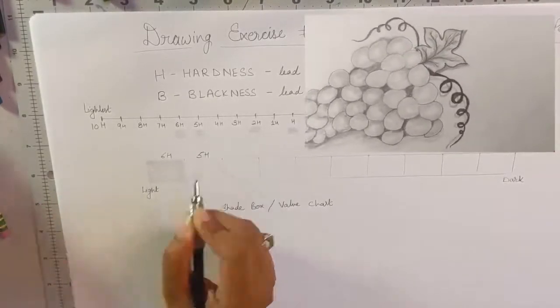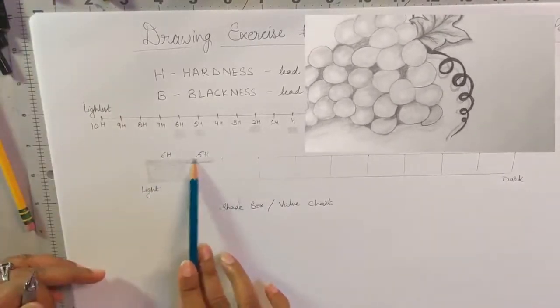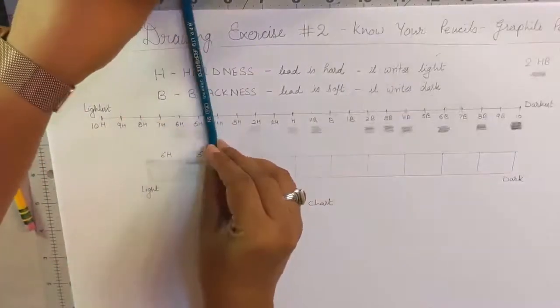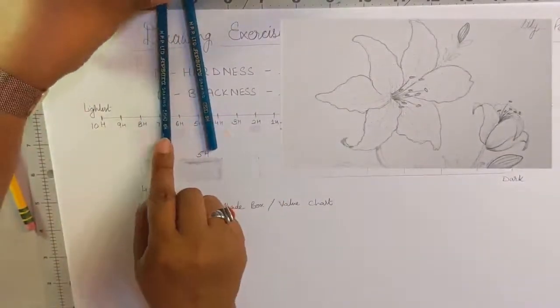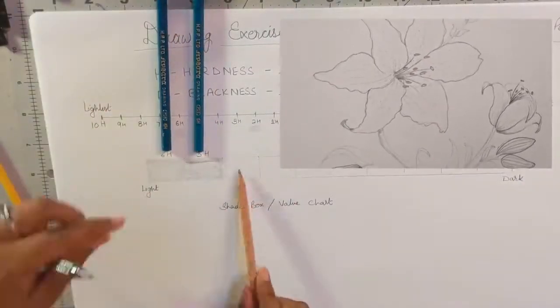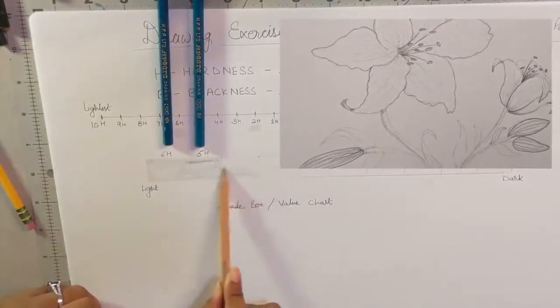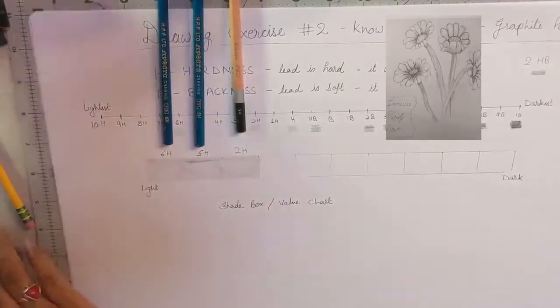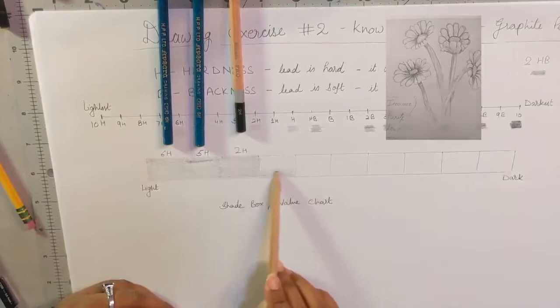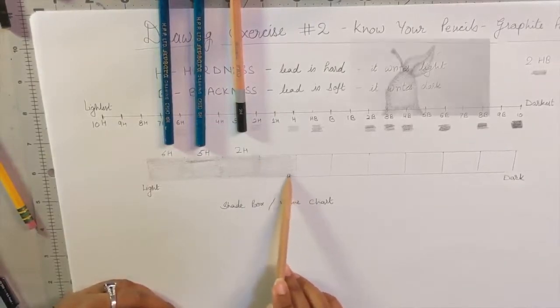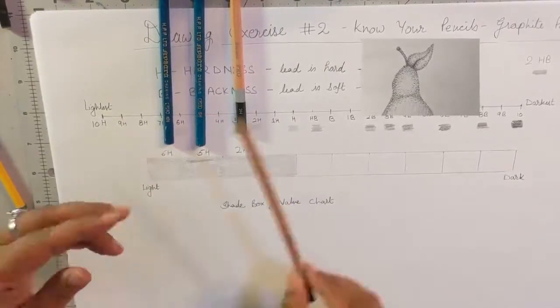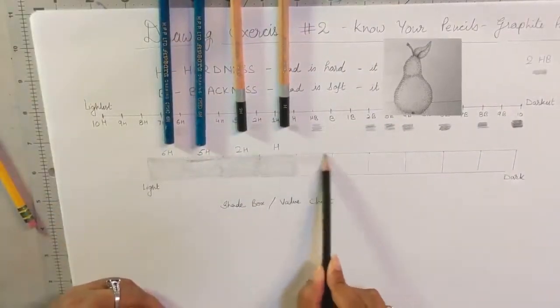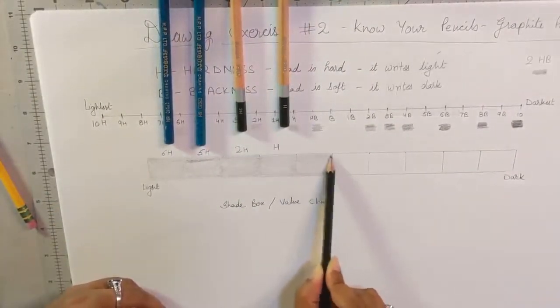You can call this a shade box or value chart. We'll start from the lightest pencil 6H, and as we go along we'll keep increasing our pencil numbers. After 6H I'm using 5H. As you see in the picture, the grapes are very light and the shadows behind the grapes are dark. That's how we choose the pencil. The veins in the flowers are very light, so I choose all the H pencils to draw the veins. In this flower you see all the deep lines, I choose little dark pencils. This is a stippling project in which you choose various pencils to get the value and make your artwork very realistic.